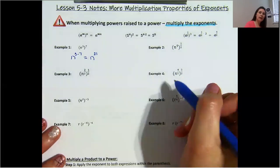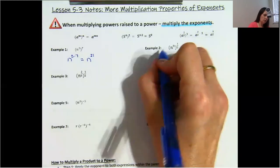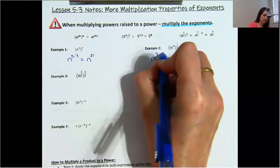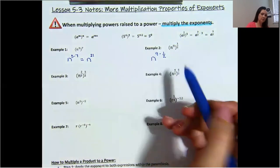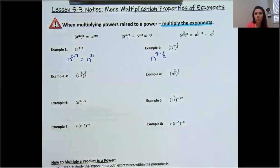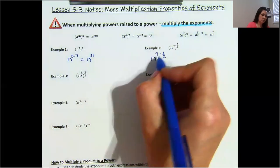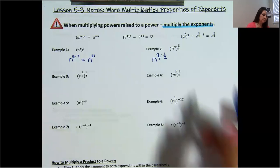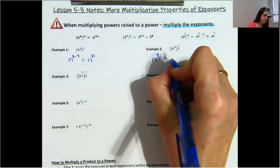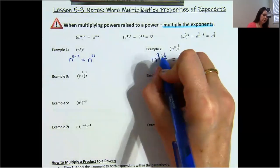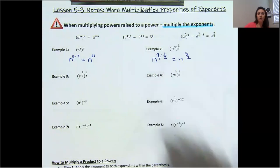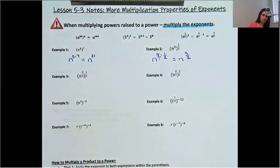Let's go ahead and go to example 2. We have n to the power of 9 times 1/2, because it's raised to the power of 1/2. This is just the same as 9 over 1. So we're just going to multiply straight across, and we end up with 9 times 1 is 9 and 1 times 2 is 2. So n to the power of 9/2.